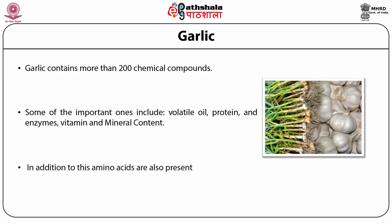In addition to this, garlic also contains phosphorus, potassium, sulfur, selenium, calcium, magnesium, sodium, iron, manganese, and trace iodine. 17 amino acids are found in garlic, including 8 essential ones.